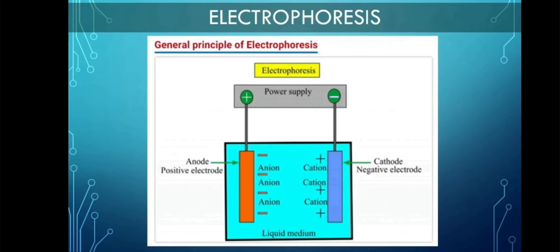Principle: You can see there's a power supply that supplies power to the anode or positive electrode and the cathode or negative electrode, suspended in a liquid medium. When charged molecules are placed in an electric field, they migrate toward either the positive or negative pole according to their charge. In contrast to proteins which can have either net positive or negative charge, nucleic acids have a consistent negative charge from their phosphate backbone and migrate toward the anode.